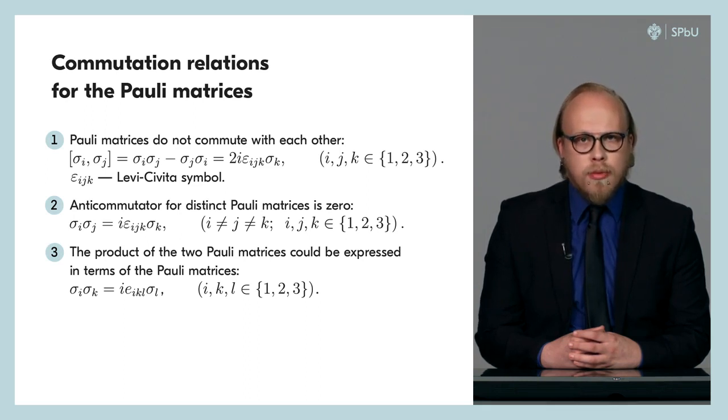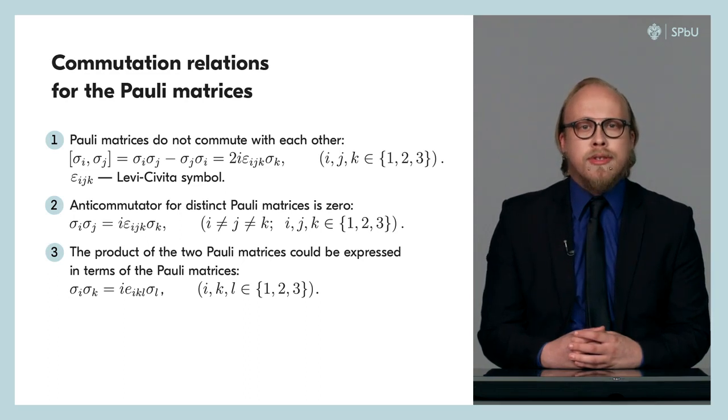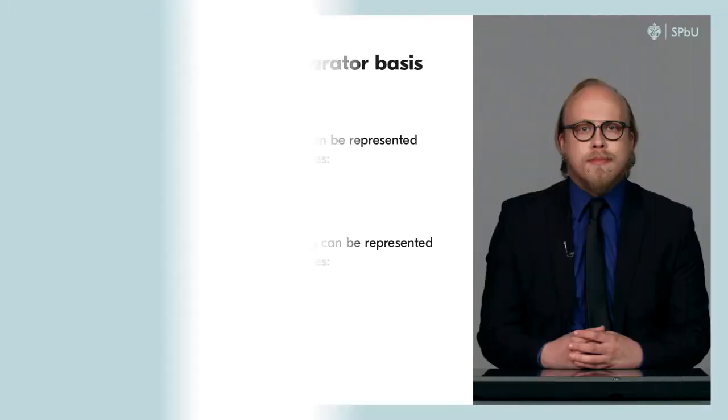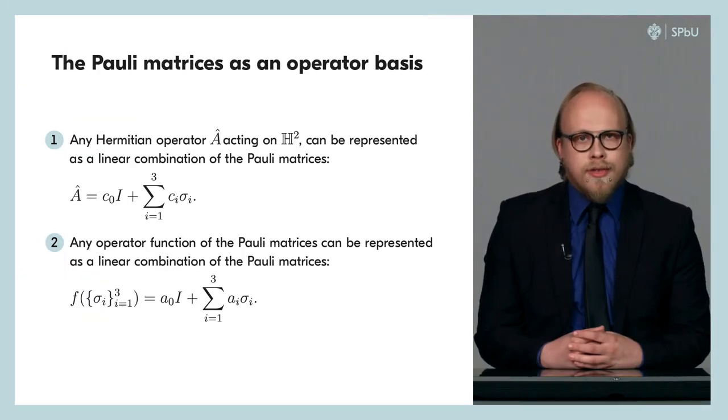The last property ensures that any Hermitian matrix can be represented as a linear combination of Pauli matrices and the identity matrix. That is, they are the basis for 2×2 Hermitian matrices. In addition, if we have some function of Pauli matrices, that its decomposition can also be represented as a linear combination of Pauli matrices, if, of course, such decomposition is possible at all.